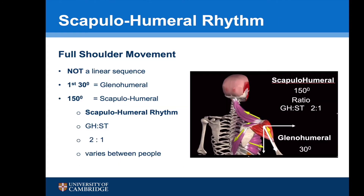So far I've described the movements of the scapulothoracic joint in their component parts. However, in real life this is not a linear sequence. In fact, the first 30 degrees of abduction is purely done at the glenohumeral joint, and the next 150 degrees is a combination of the scapulothoracic joint and the glenohumeral joint working together, sometimes known as the scapulohumeral rhythm. There's normally a ratio of two to one, but this can vary greatly between patients.